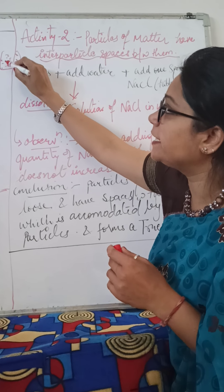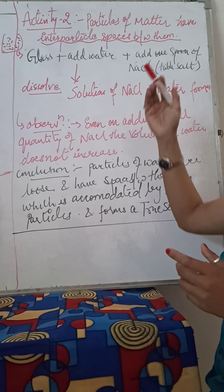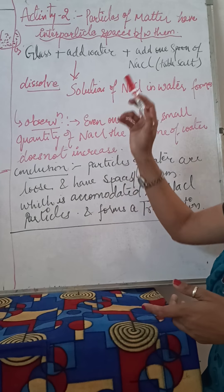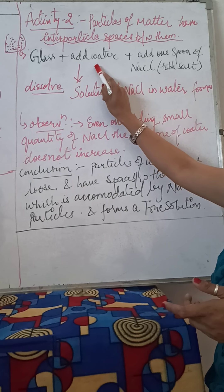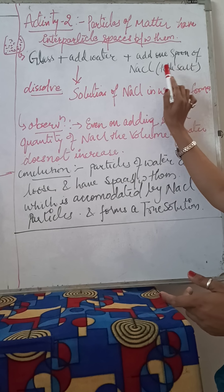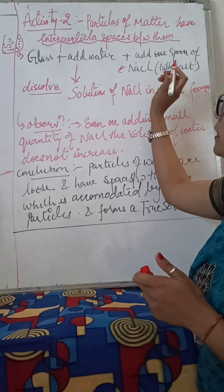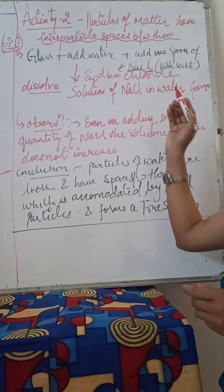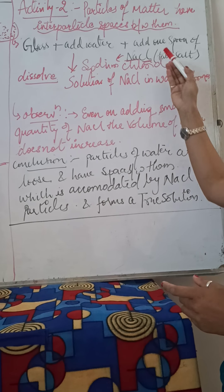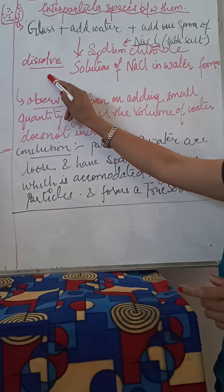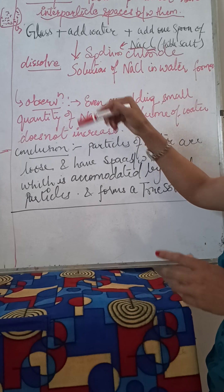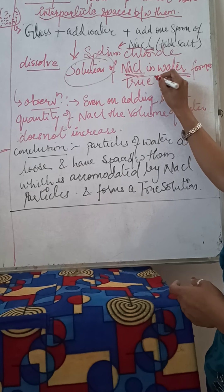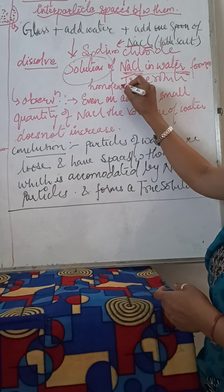Now we are going to see this activity through a live experiment. Here we have a glass filled with water, and I am going to add a drop of red ink into it. Earlier the color of water is transparent. After adding the red ink, the color of the water changes to light red, showing that the ink particles are mixing with the water particles. On adding more water, the color of the solution fades, showing that the ink particles intermix completely with water, demonstrating the property of matter having tiny particles.